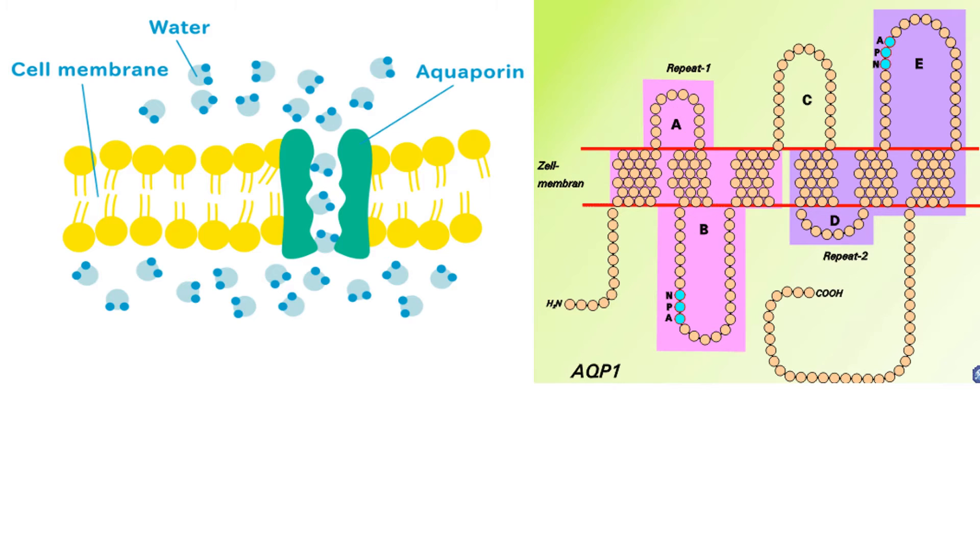Regions B and E are hydrophobic and contain NPA motifs, which is asparagine, proline, and alanine. They create a distinctive hourglass shape.